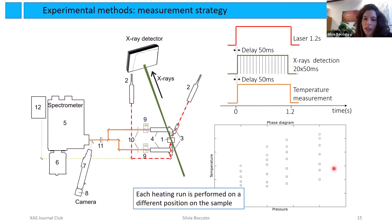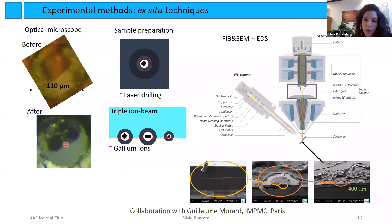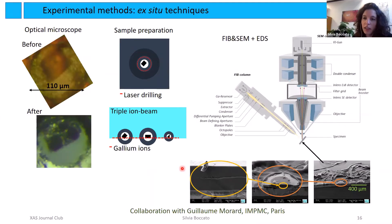In some cases we recovered the samples: after quenching, we look at them optically to identify spots where the laser heated the sample. We can also cut a section of the very small sample with a focused ion beam and examine it with scanning electron microscopy, which is very useful for ex-situ chemical analysis and to check what happened to the sample.